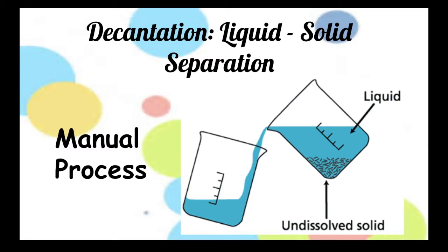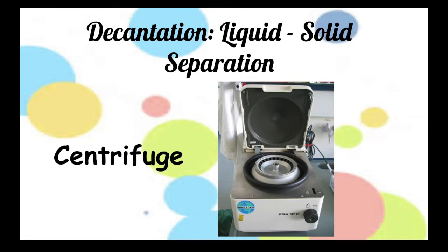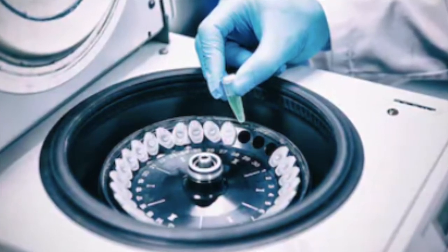Let's now have a closer look at liquid solid separation. Just like immiscible liquid separation, this can also be done manually. This can be manually done by pouring the liquid substance to another container, leaving the solid substances in the original container. Liquid-solid separation can also be done by using centrifuge. This device uses centrifugal force to separate various components of a fluid. A centrifuge can be a very effective filter that separates contaminants from the main body of fluid.